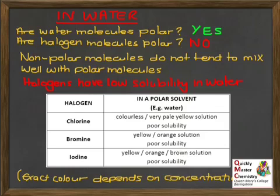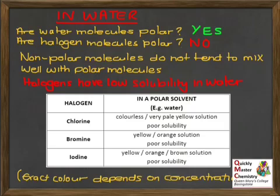They do dissolve to a certain extent, though, and they give solutions of differing colours. Looking at the table, chlorine dissolves a bit in water to make a colourless or very pale yellow solution. Bromine also dissolves a bit in water, giving a slightly more coloured yellow to orange solution. Iodine also dissolves a little, giving a yellow to orange to brown solution. The exact colour depends on the concentration — a dilute solution of iodine in water is pale yellow, while a concentrated one would be more brown. These are called aqueous solutions.